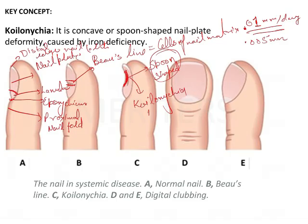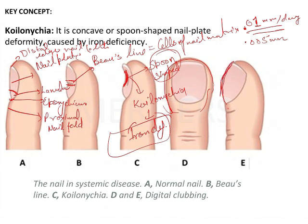If we particularly talk about deficiency, koilonychia generally occurs in the iron deficiency condition. Now if you see this particular figure, here you will see the nails with convexity. Generally the nail bed angle is acute, but here the nail bed angle will become too large, and the convex surface of the nail plate will be seen. This particular phenomenon is known as clubbing of the nails.